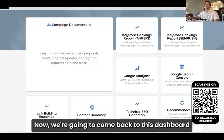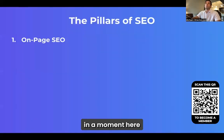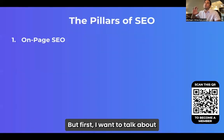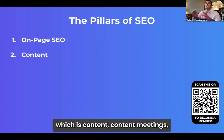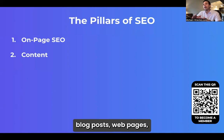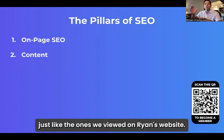We're going to come back to this dashboard in a moment, but first I want to talk about the next pillar of search engine optimization, which is content. Content means blog posts, web pages — just like the ones we viewed on Ryan's website — targeting specific keywords.